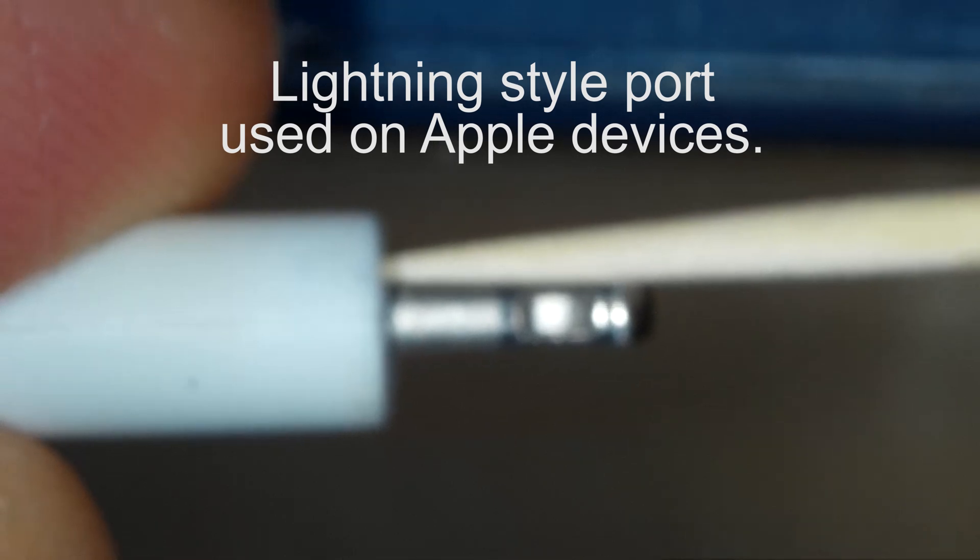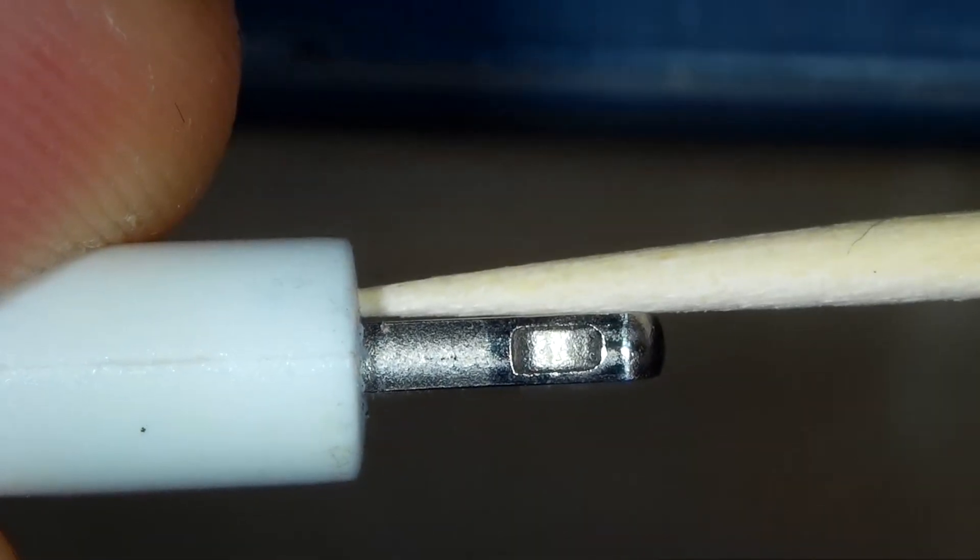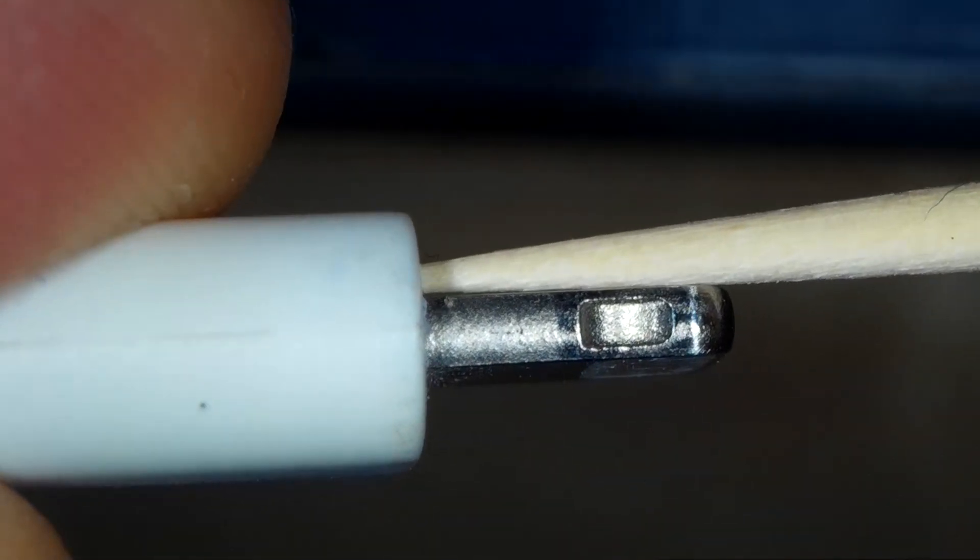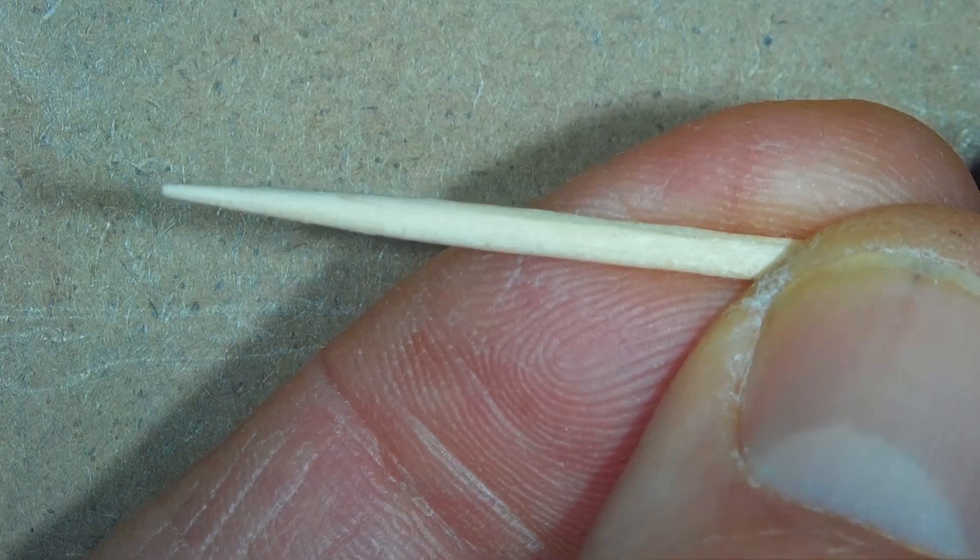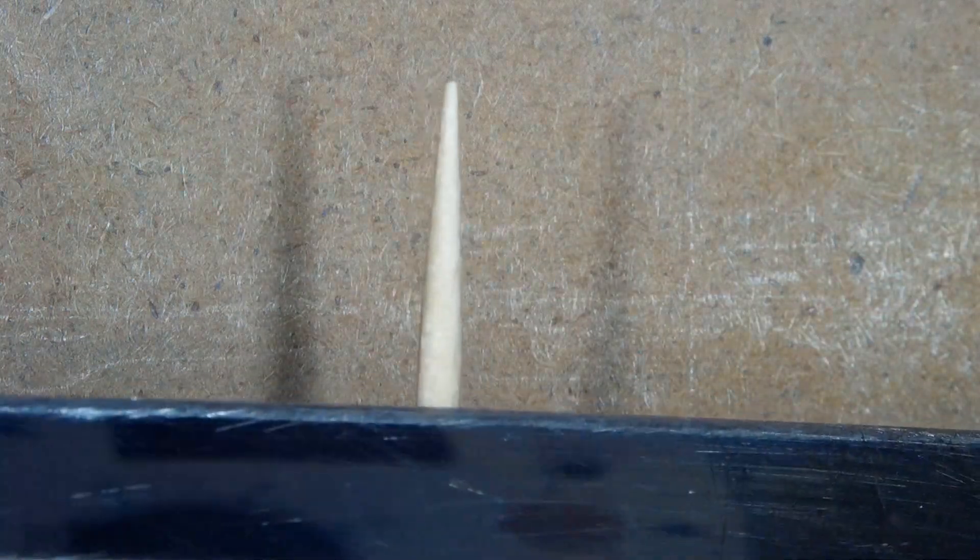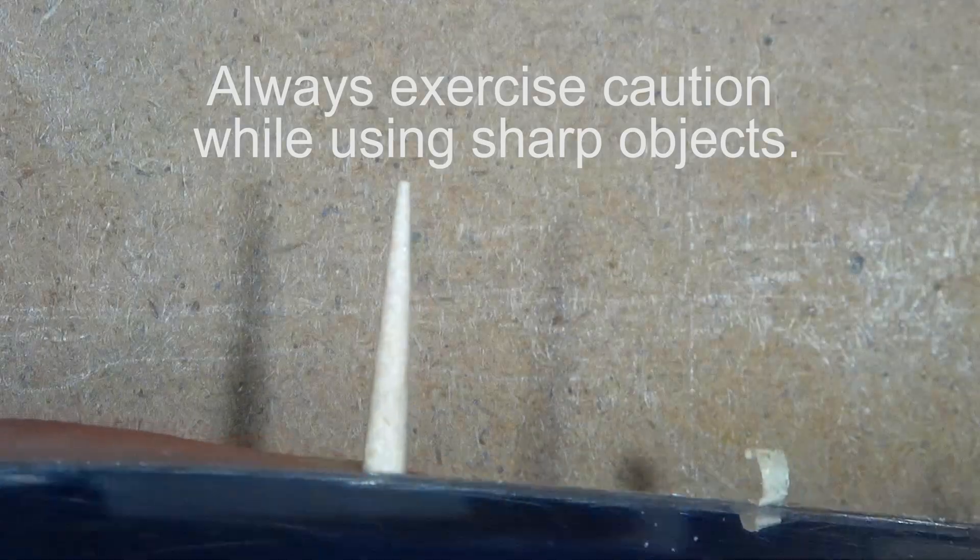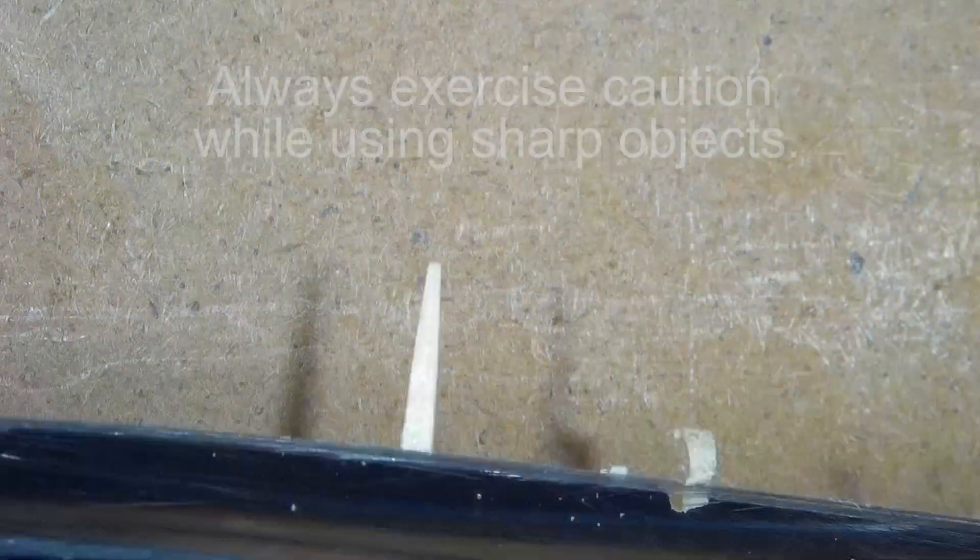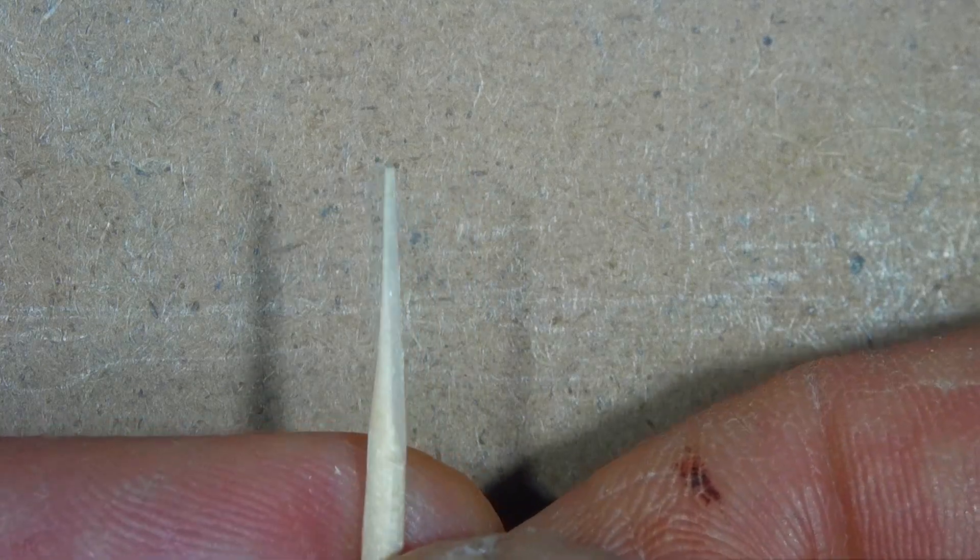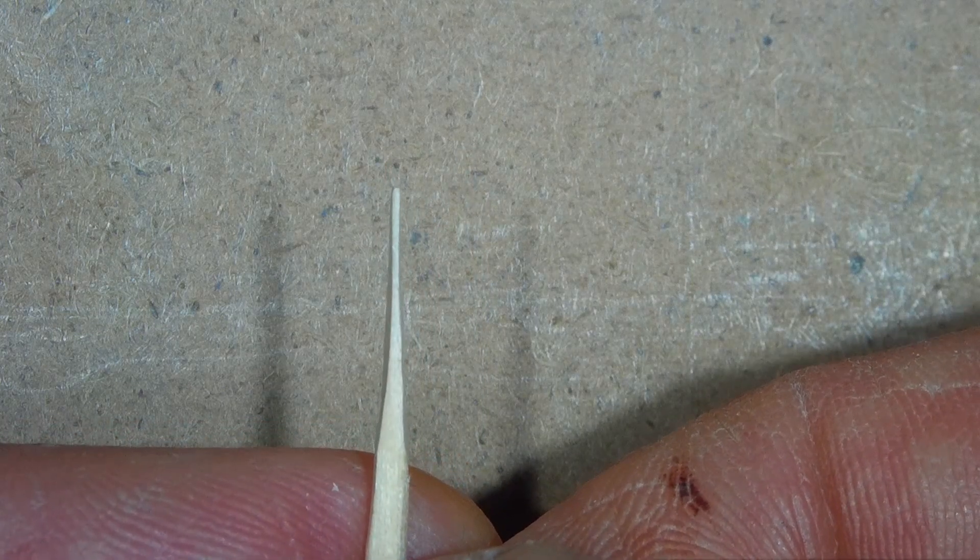Beginning with the lightning style port, I found an ordinary toothpick that is slightly modified works well for this one. I carefully shave it on two sides so the part of the pick that enters the port is no thicker than the stem of the charge plug that normally plugs into the port. If you find a skinnier toothpick, you won't need to do this step.